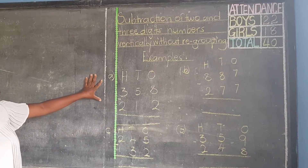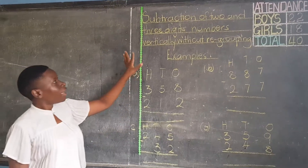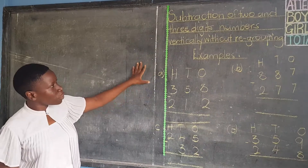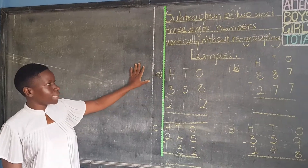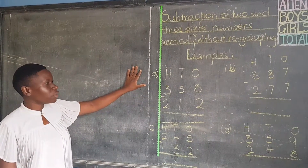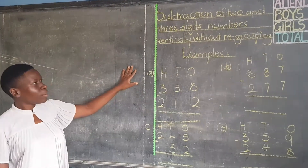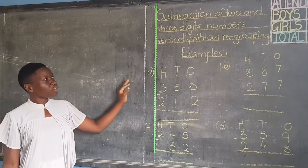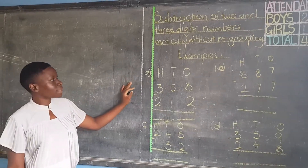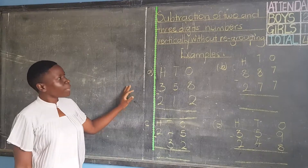This is Mathematics. Today's lesson is about subtraction of two and three-digit numbers vertically without regrouping.